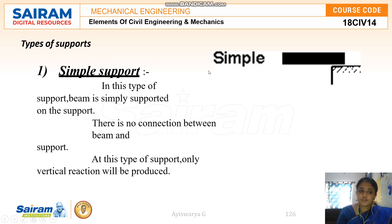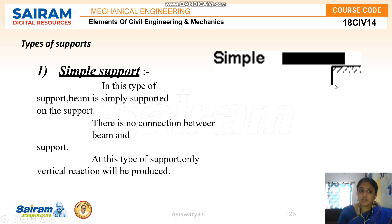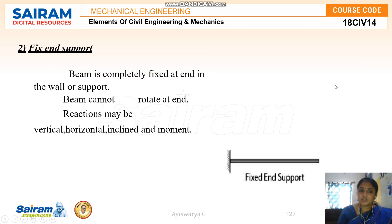The first type of support is simply support. In the simply support, there is no connection between the beam and the support. This type of support poses only a vertical reaction. Over the column, a beam will be rested and only one vertical reaction can be seen over the support.